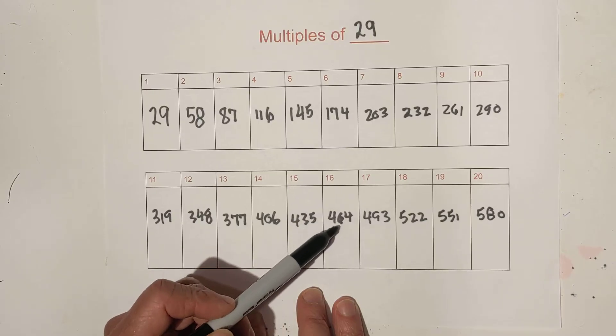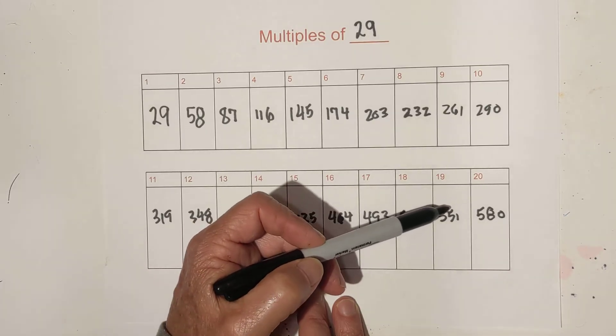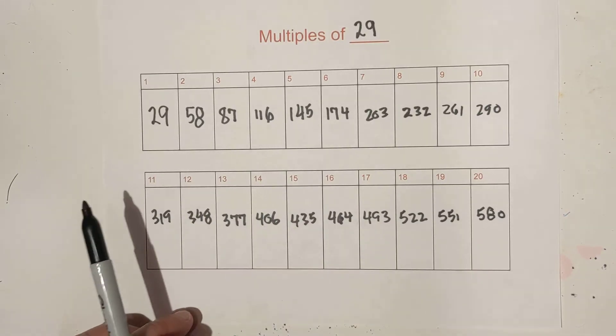16 times 29 is 464, 17 times 29 is 493, 18 times 29 is 522, 19 times 29 is 551, and 20 times 29 is 580.